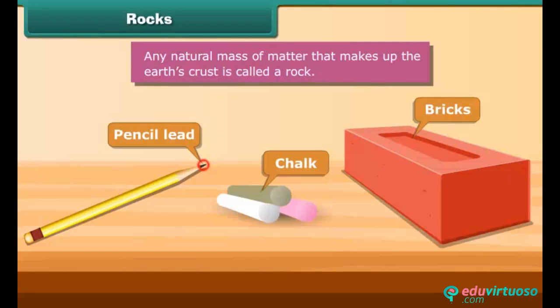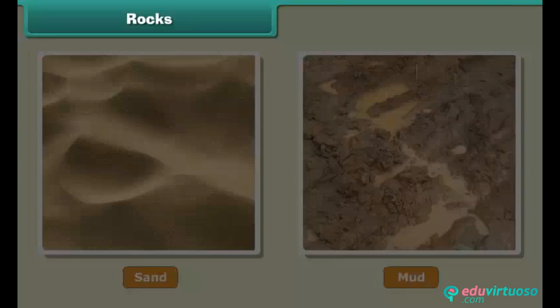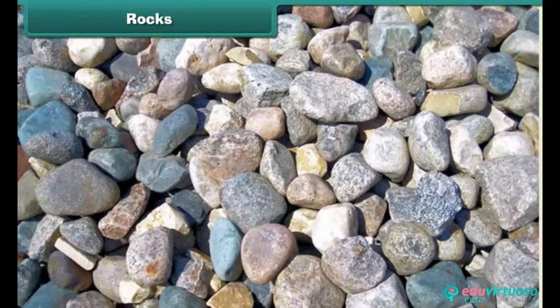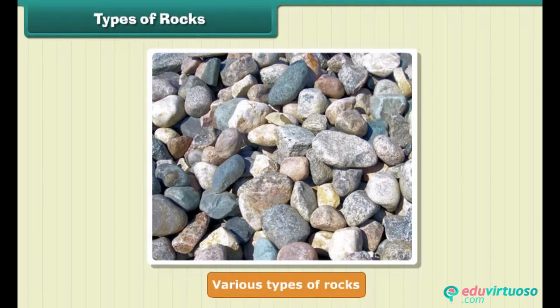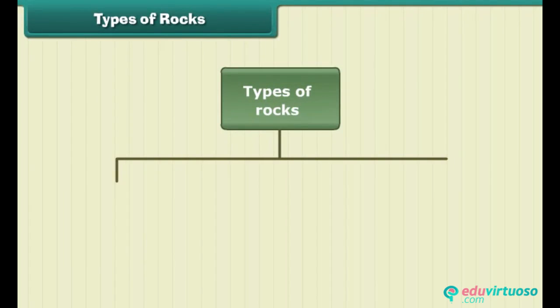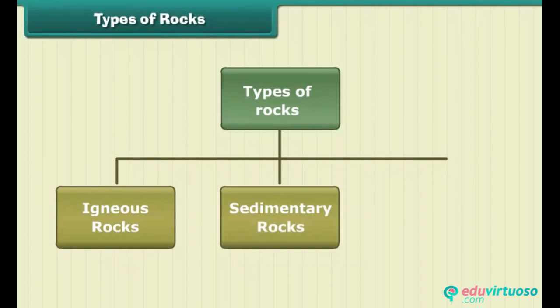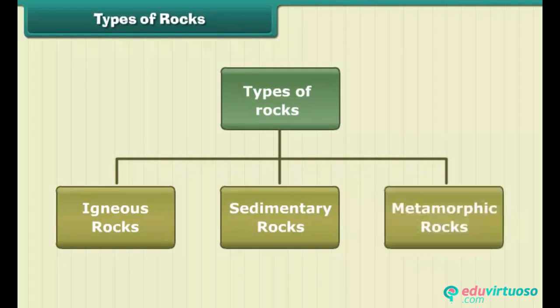Any natural mass of matter that makes up the earth's crust is called a rock. Do you know sand and mud are also rocks? Rocks can be of different size and color. The process that breaks rocks down into smaller pieces is called weathering. We now know that the earth's crust is made up of various types of rocks. The three major types are igneous rocks, sedimentary rocks, and metamorphic rocks.